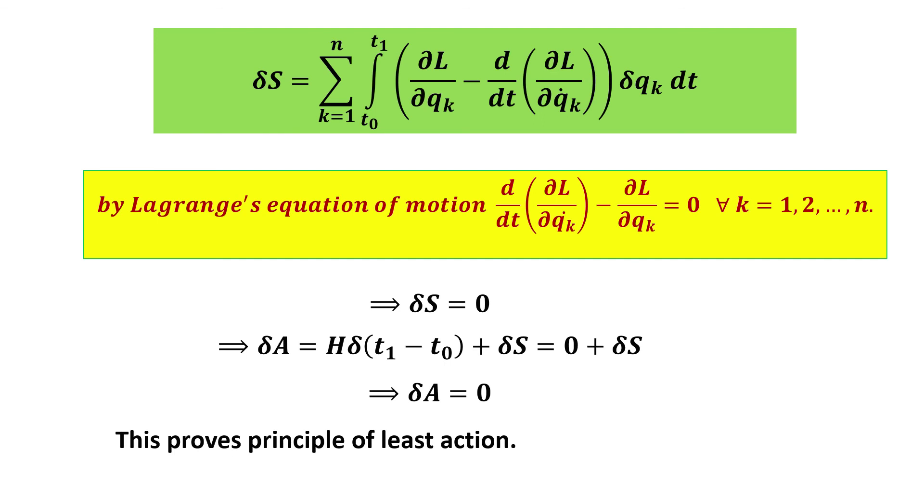Now we use Lagrange's equation of motion: d/dt(∂L/∂q̇k) - ∂L/∂qk = 0 for all k = 1, 2, ... n. Using this, the expression becomes zero. This means δS = 0.